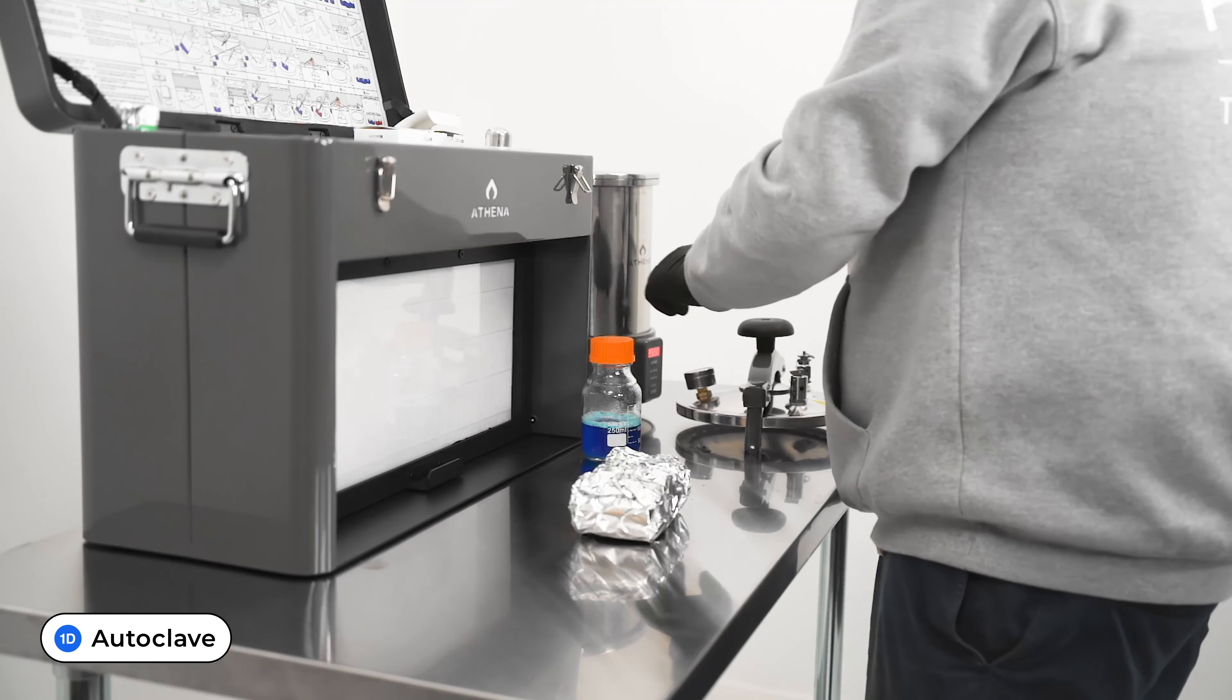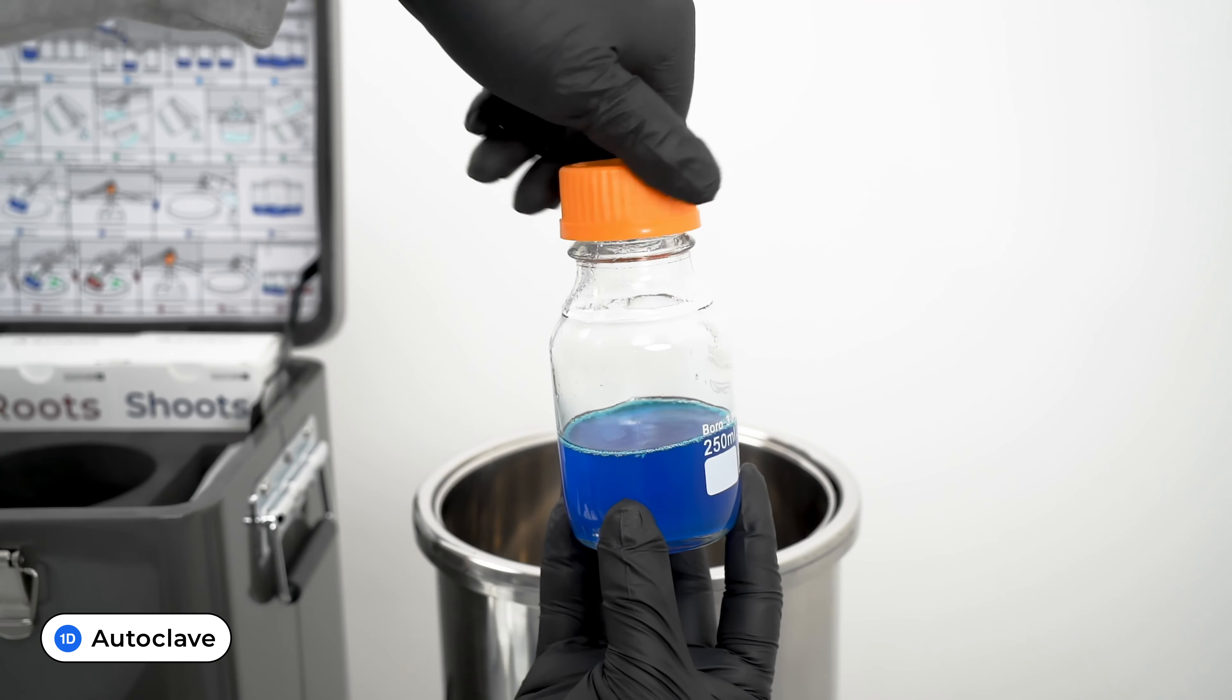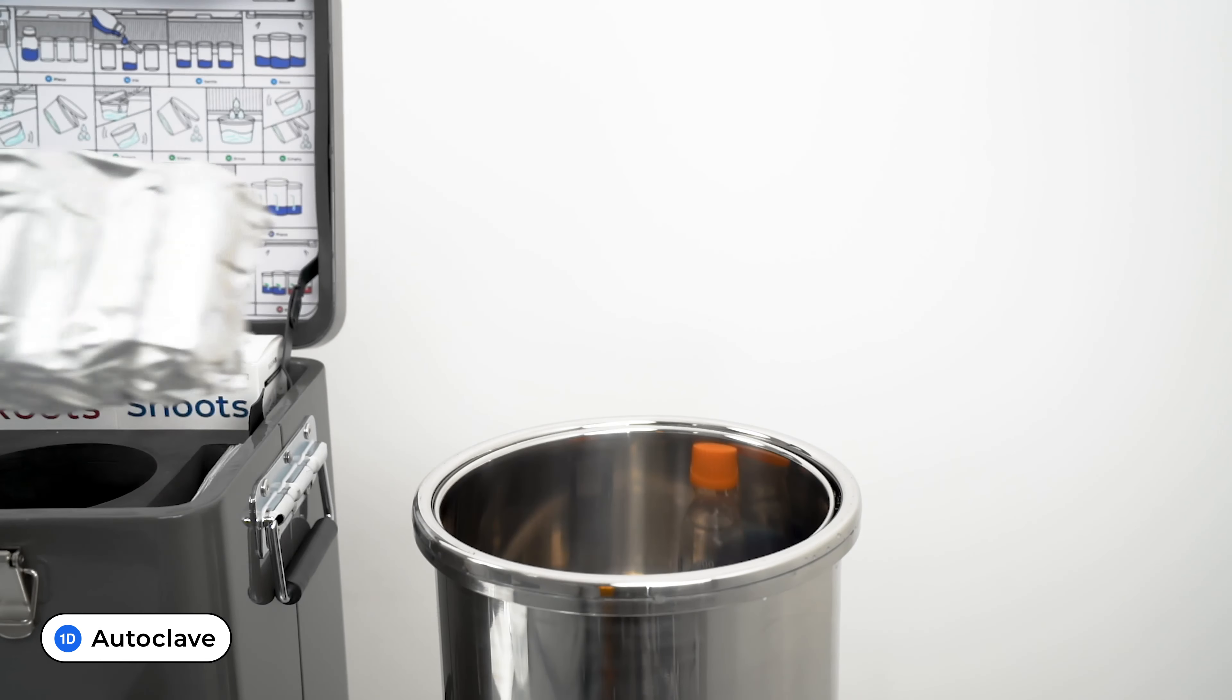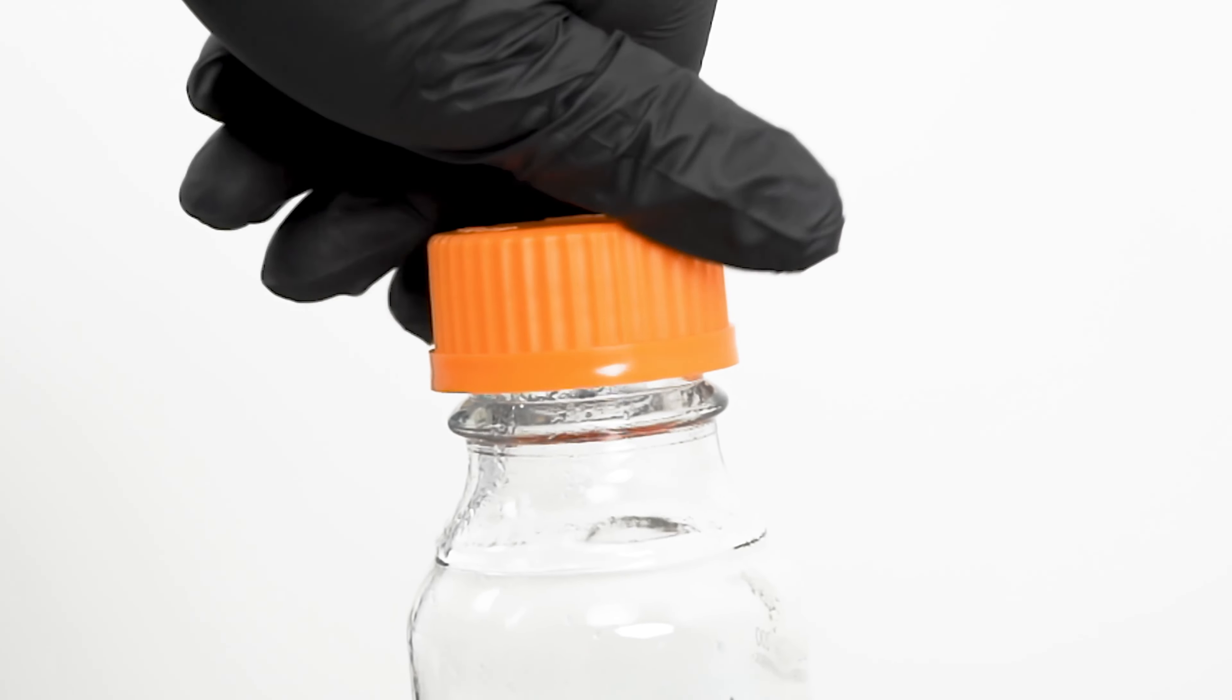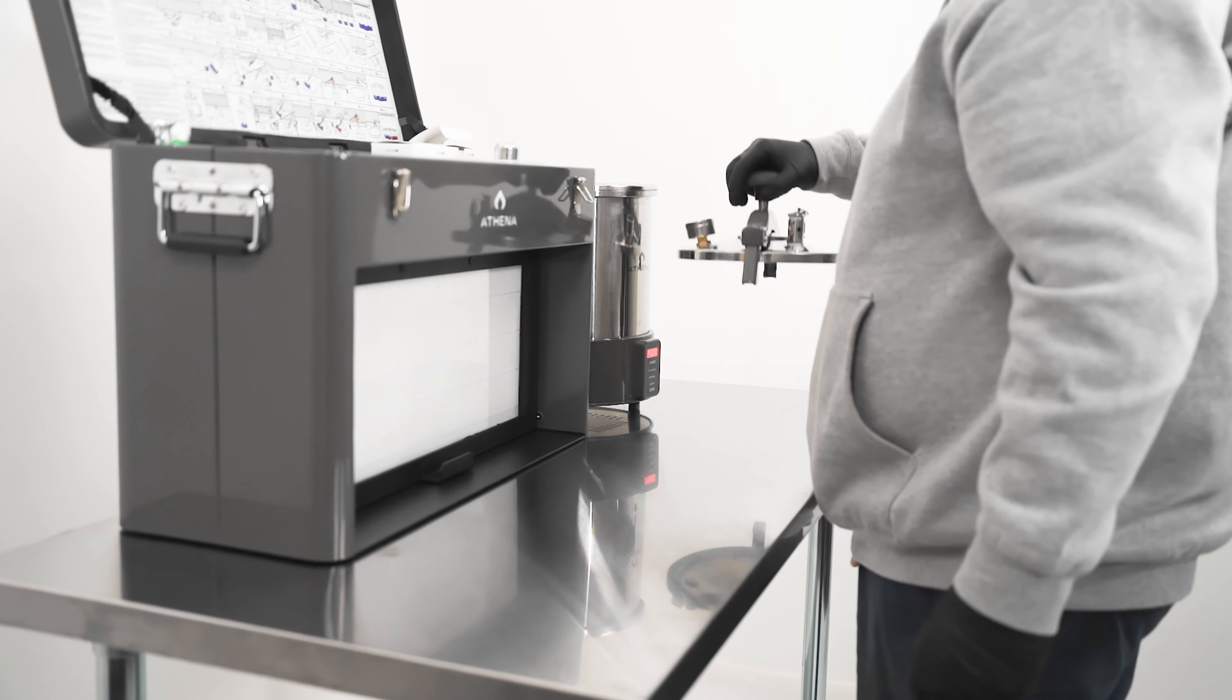Locate the exhaust valve on the autoclave lid and open it. Place the desired amount of media and culture vessels into the autoclave. Any container placed in the autoclave must have a loosely opened lid to allow for pressure exchange.